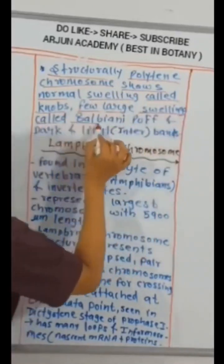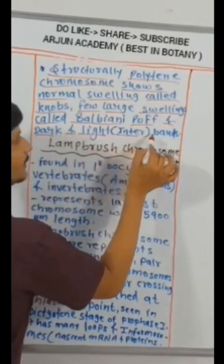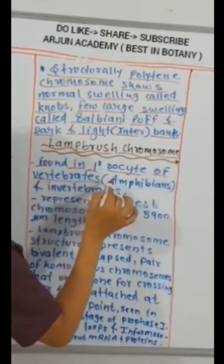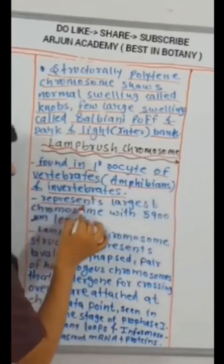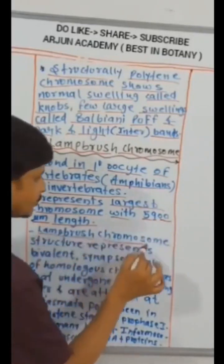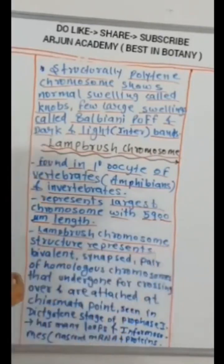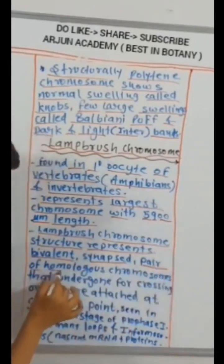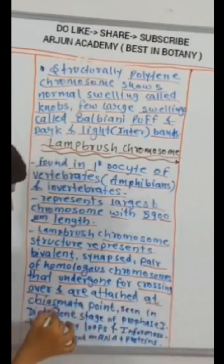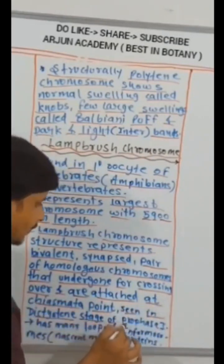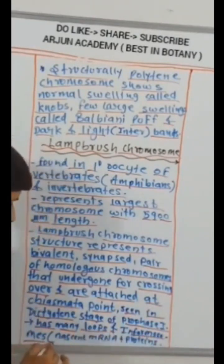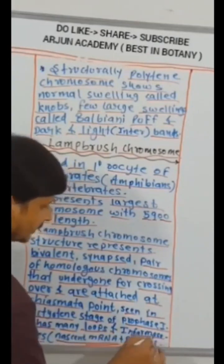Lampbrush chromosome. Found in primary oocyte of vertebrates like amphibians and invertebrates. Represents largest chromosome with 5900 micrometer length. Lampbrush chromosome structure represent bivalent synapsed pair of homologous chromosomes that undergone for crossing over and are utilized at chiasma point. Seen in diplotene stage of prophase 1, has many loops and informosomes. Mixture of nascent mRNA and proteins.